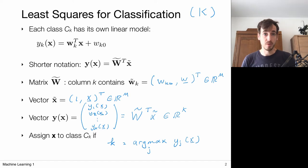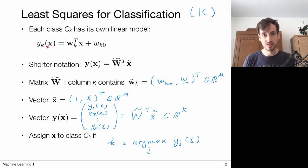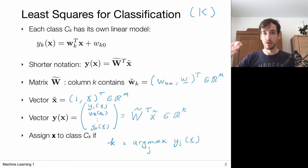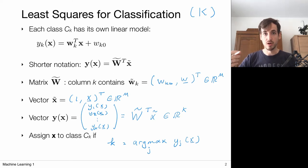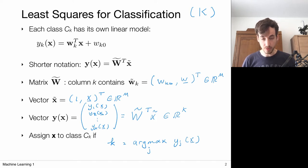It could be useful to think of these discriminant functions as returning values interpretable as the distance of data point x to the decision surface. The larger this value, the further away the point lies from the decision surface — and the more confident we are that the point lies on the correct side. In that sense, it makes sense to use this intuition to select the most probable class.